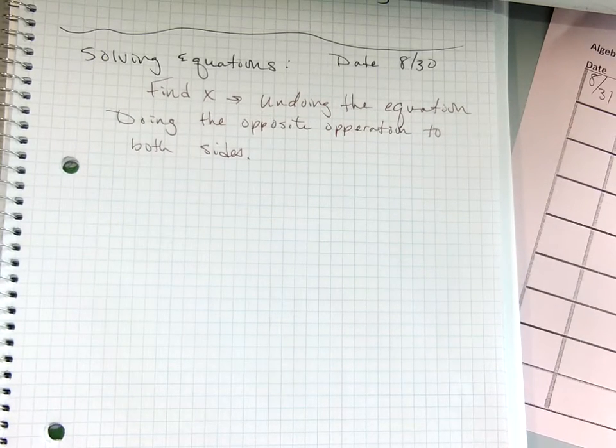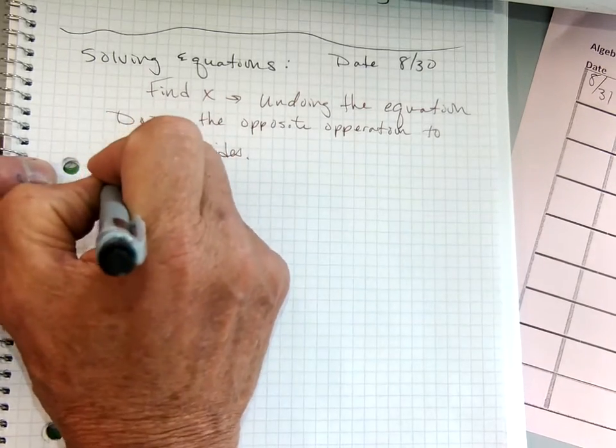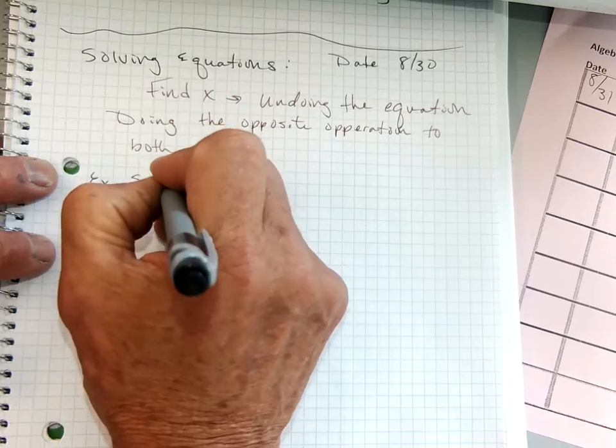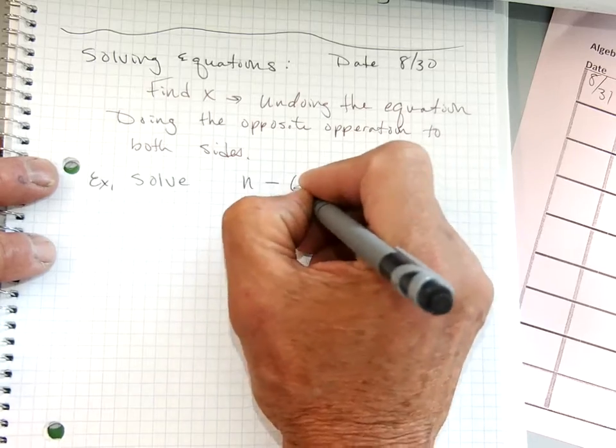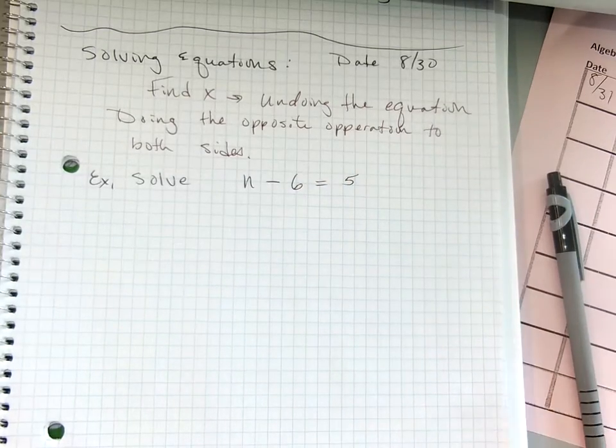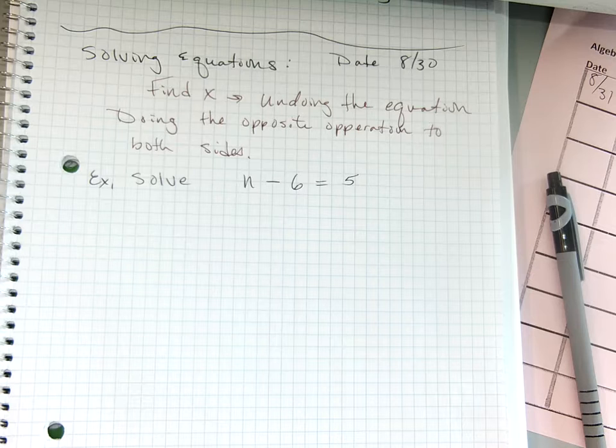Let's start with something really easy. Example one. Solve n minus 6 equals 5. So n is a number. If you've never really understood algebra, n is just a number. Take a number, subtract 6 from it, and you get 5. There's only one number it can be, right? It's got to be eleven. Everybody agree? But I don't want you to do it in your head. I want you to do the process.